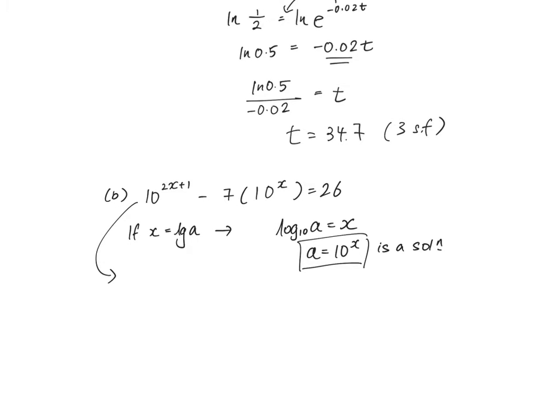So rewriting my question here, this is like 10 to the power of x times 2 multiplied by 10 to the power of 1. Because you can see it, 2x plus 1 is just like 2x and 1, by the product law of indices, minus 7 multiplied by 10 to the power of x equals to 26.